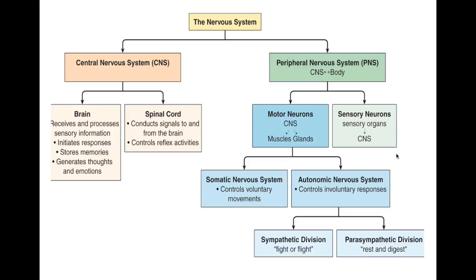Today we're going to continue on the efferent or motor neuron pathway and discuss our two different types. One is called the somatic nervous system and the other is the autonomic nervous system. The somatic nervous system controls our voluntary movements — voluntary should spark a memory of skeletal muscle from a past lesson on muscles. The autonomic nervous system controls our involuntary responses, which includes cardiac muscle, smooth muscle, as well as our glands.